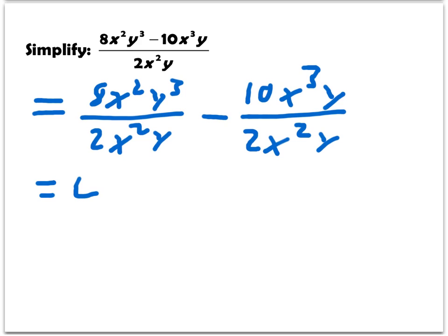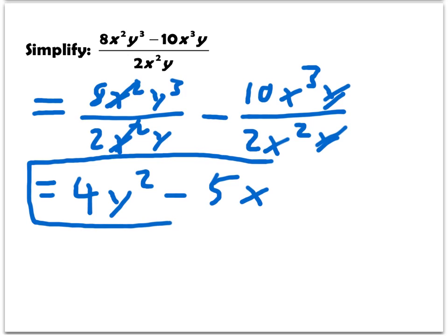I've got 8 over 2 which is 4, x squareds cancel, and then we've got y squared minus—here 10 over 2 is 5—and then we have x to the first power and the y's cancel. There we go, nothing more I can factor, so completely simplified.